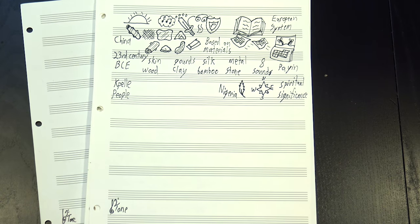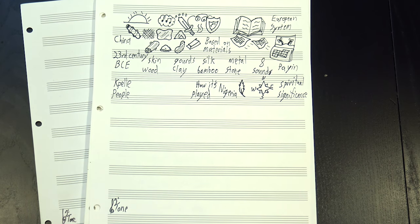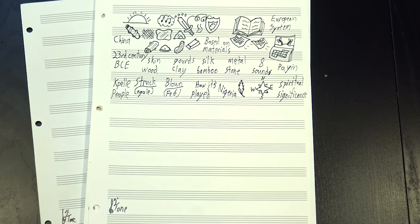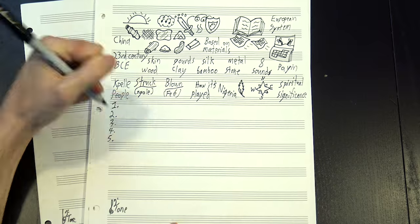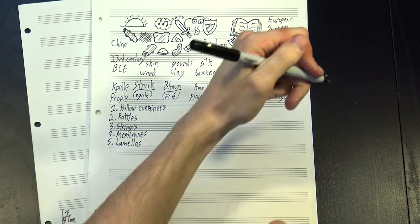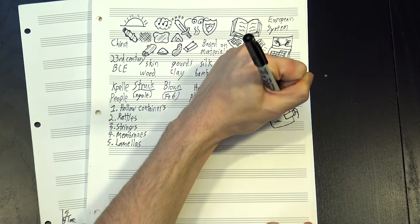The Capella people of Nigeria, on the other hand, focus on how an instrument is played, dividing into two main groups: instruments that are struck and instruments that are blown. The struck category is then broken up into five subtypes: hollow containers, rattles, and then instruments with strings, with membranes, and with lamellas, which are thin, rigid plates that are fixed at one end.